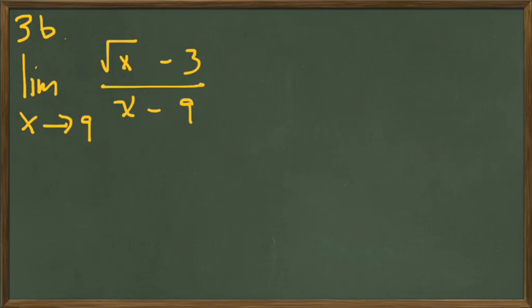Okay, so in example 3b, we again have a 0 over 0 limit because if we plug 9 into the numerator, we have the square root of 9 minus 3 or 0, and we plug 9 into the denominator and get 9 minus 9 or 0. So how are we going to handle this problem? Let's notice that we have a factor in the numerator that is of the form a minus b and that we consider the conjugate of the factor a minus b to be the factor a plus b.